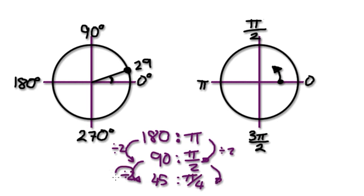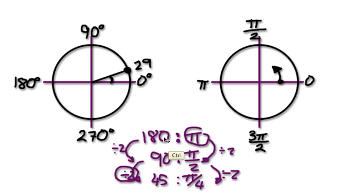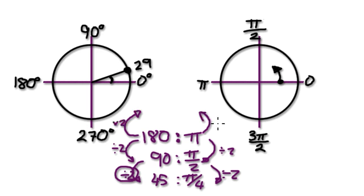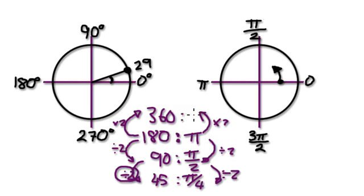So the point is, if you halve this side, then you've got to halve this side too. Starting from 180 degrees and pi radians, if you double it — times it by 2 — then you also have to times this side by 2. So when you double it, 360 degrees would be 2 pi.